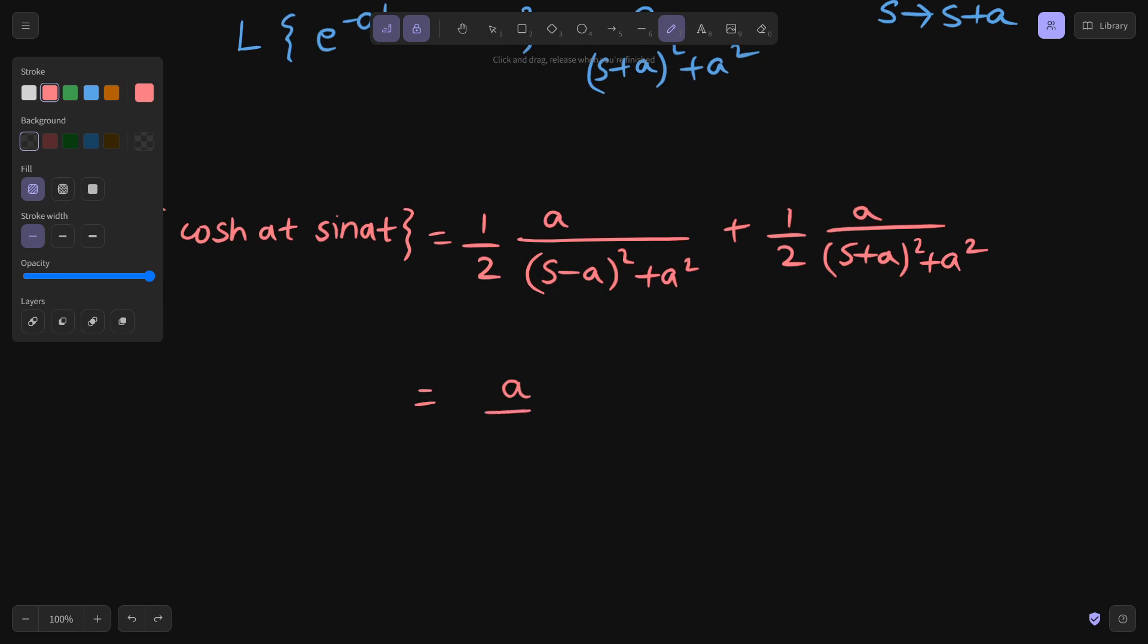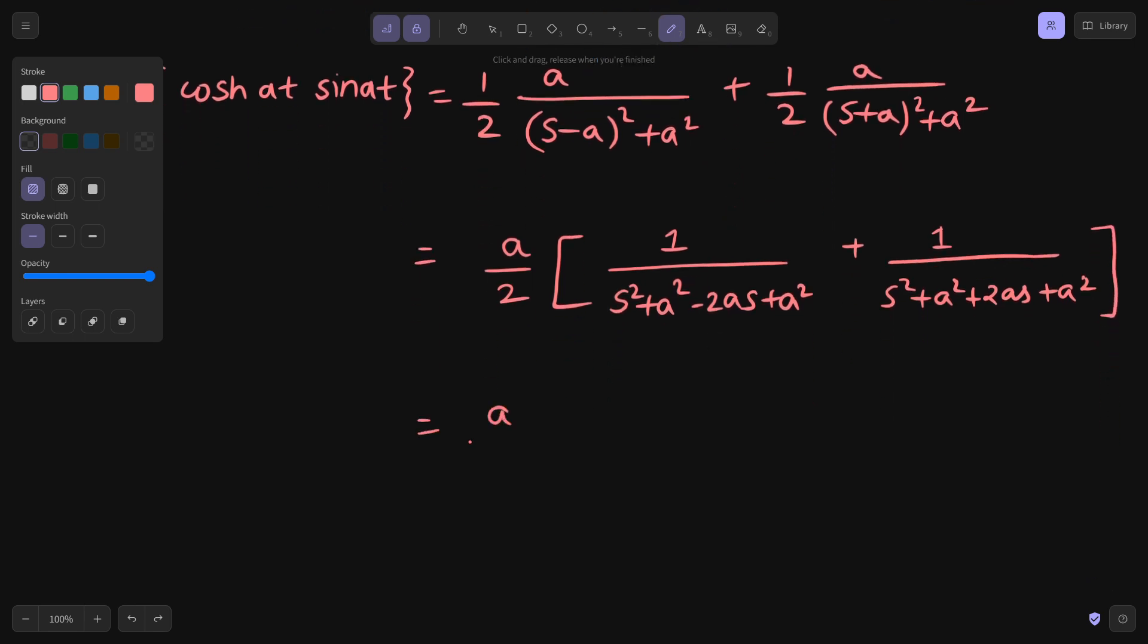Now let's simplify this. We can take a by 2 common. What we are left inside is a bit of simplification. So this is 1 divided by s square plus a square minus 2as plus 1 divided by s square plus a square plus 2as.